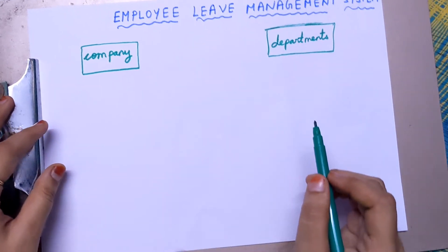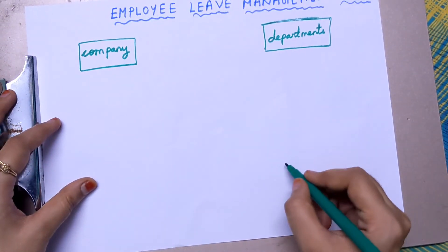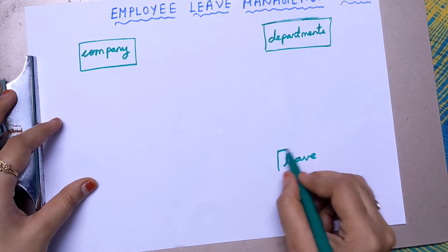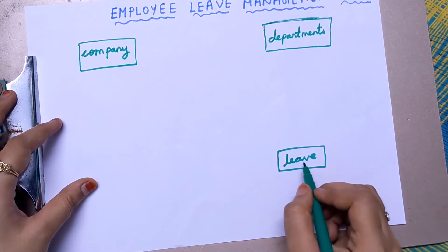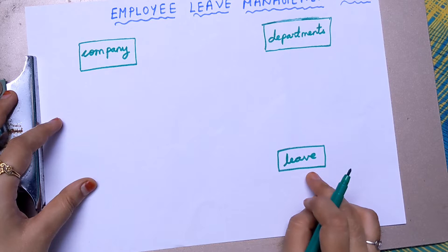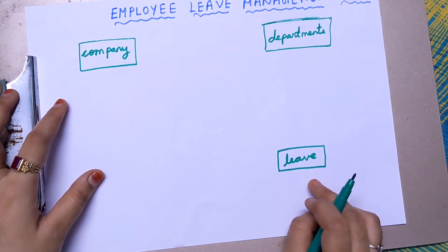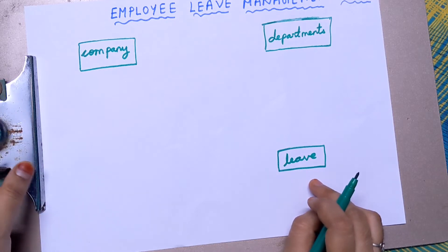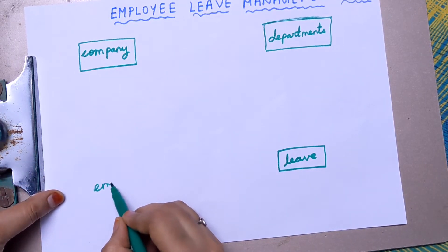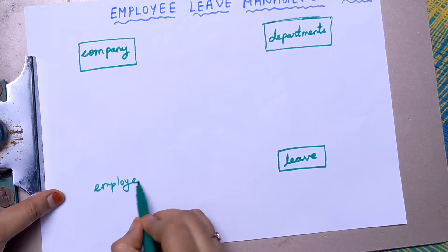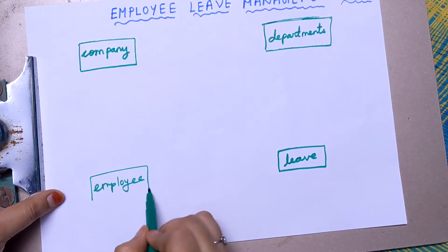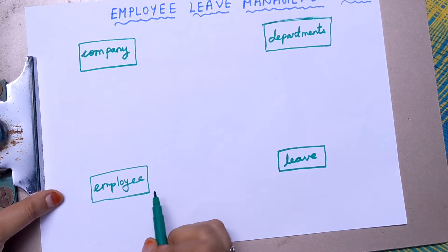The next important entity is leave. Leave is conceptually existing — we cannot see or touch it, but employees take leave, so it is conceptually happening. The next entity is employee. An employee is a person, and a person is physically existing, therefore employee is an entity.